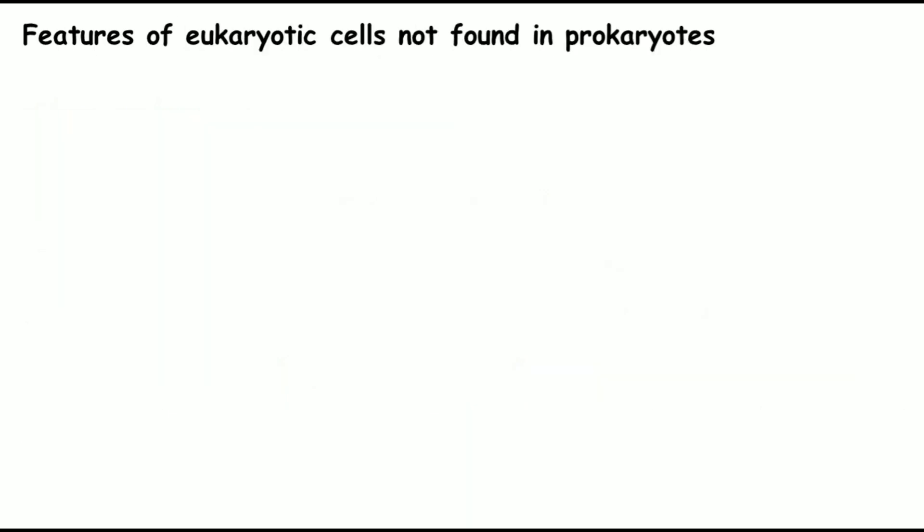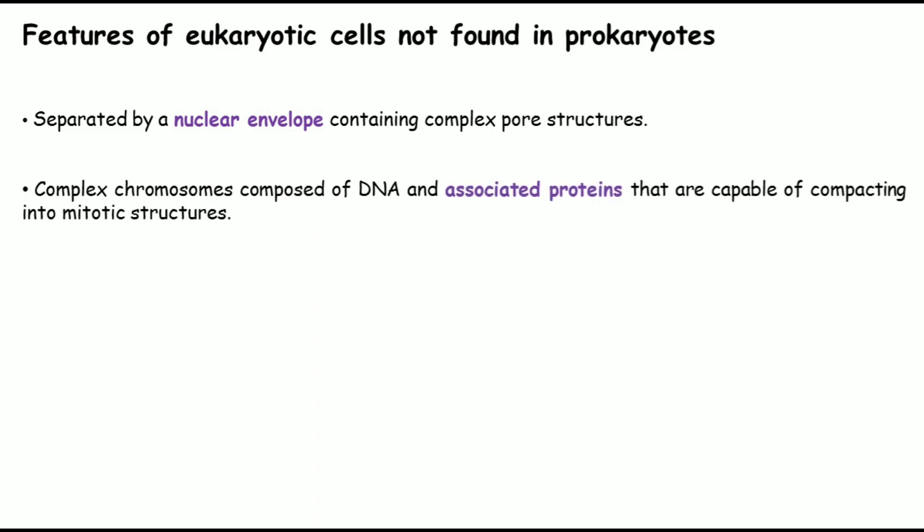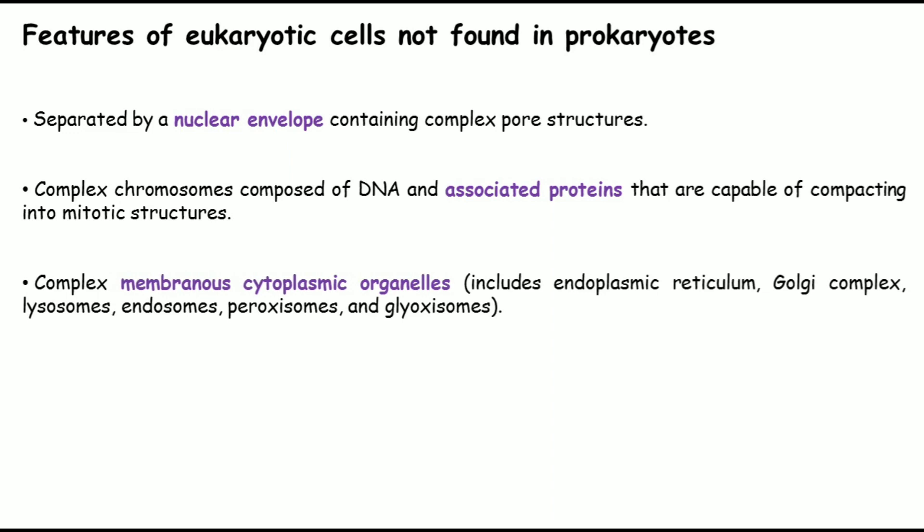Key differences between eukaryotes and prokaryotes: eukaryotes have a nuclear envelope containing a complex structure, absent in prokaryotes. DNA-associated proteins called histones help compact a large amount of DNA into a small dot-like structure within the cell — these are not present in prokaryotes. Complex membranous cytoplasmic organelles like the endoplasmic reticulum, Golgi complex, lysosomes, endosomes, peroxisomes, and glyoxysomes are membrane-bound in eukaryotes but absent in prokaryotes.